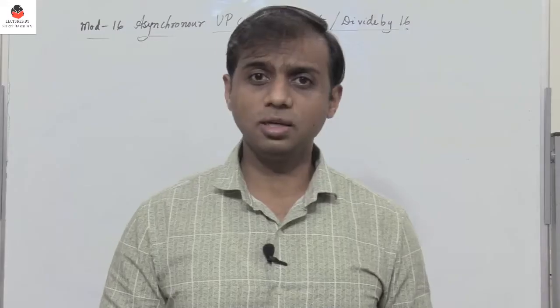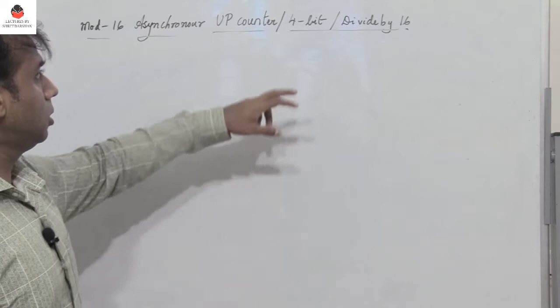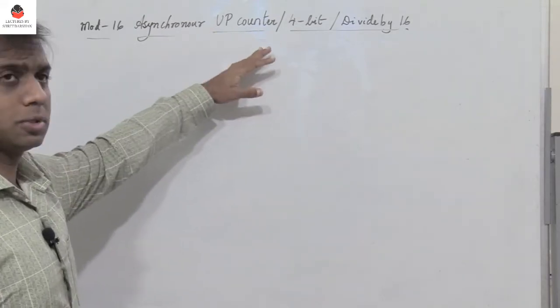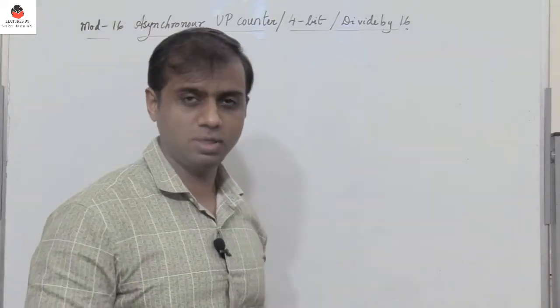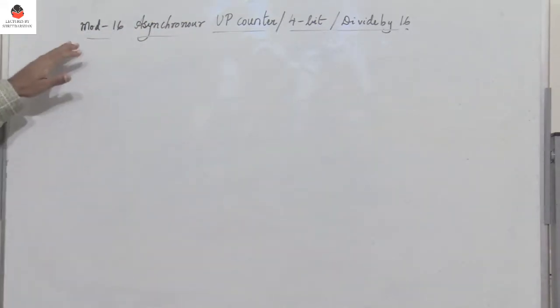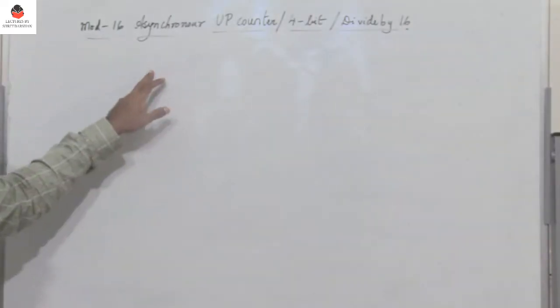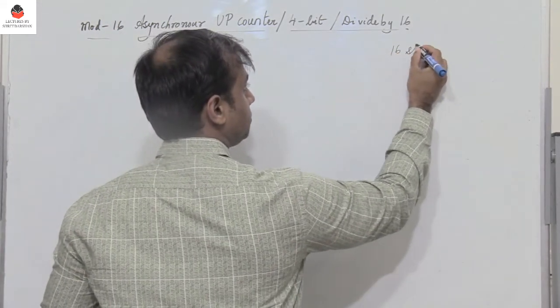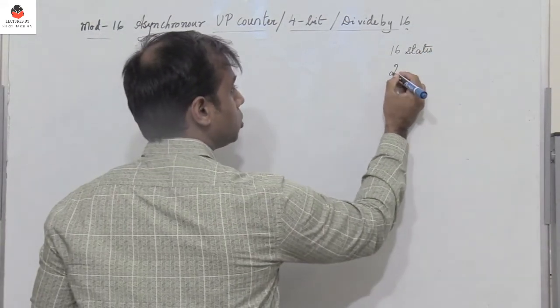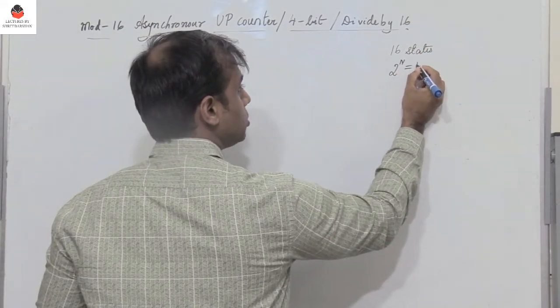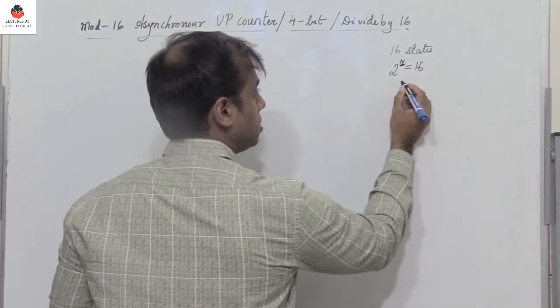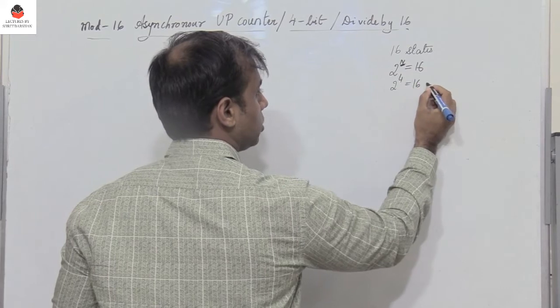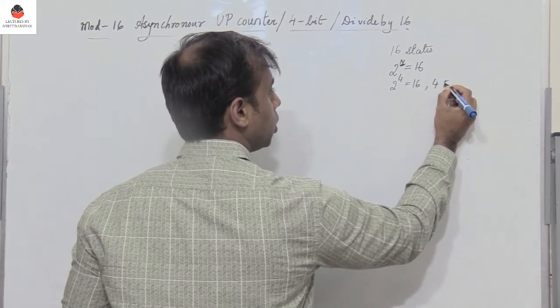We will design a mod 16 asynchronous up counter, also called a 4-bit asynchronous up counter or a divide-by-16 counter. To design this, we need 16 states, so 2^n = 16, which means n = 4. Therefore, 4 flip-flops are required.